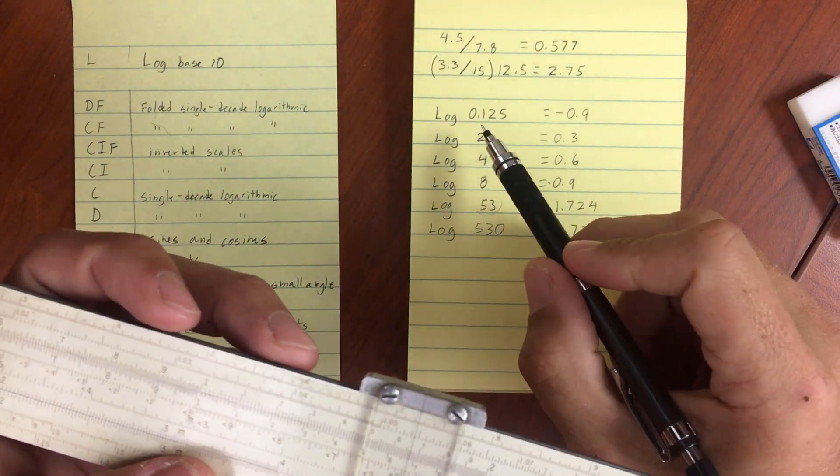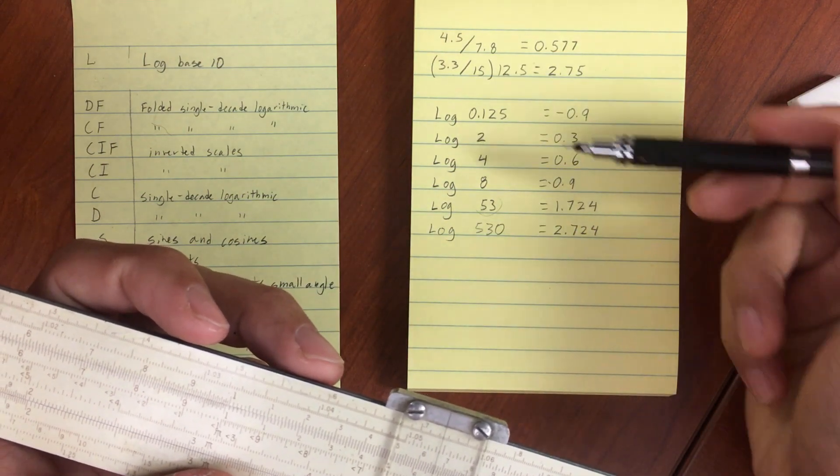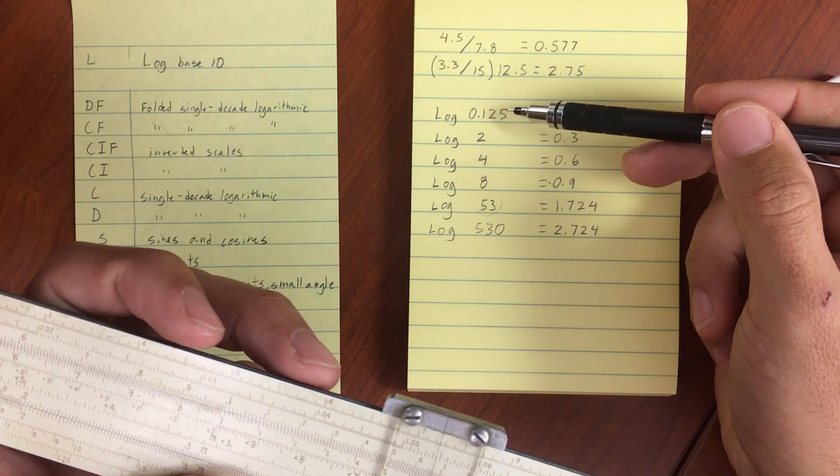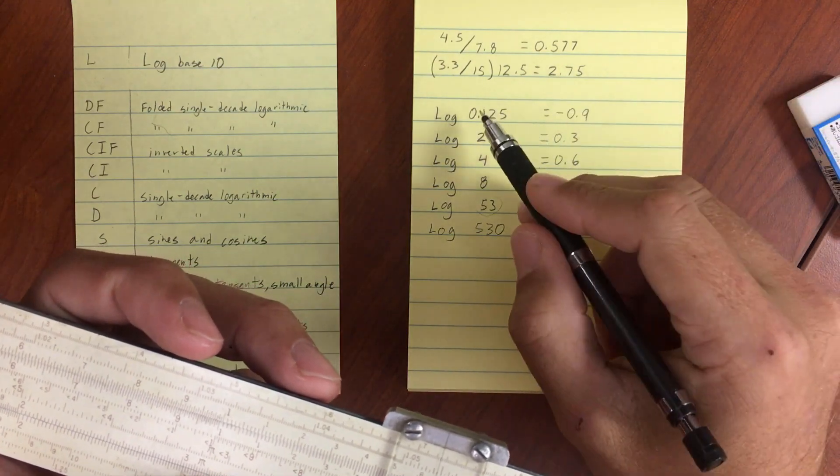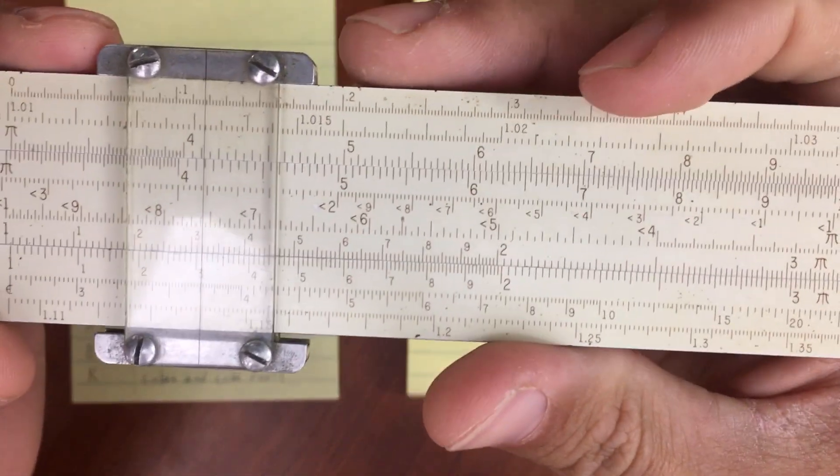The last thing here that I wanted to do is, just like we added one here, if we are less than one we need to subtract. So point 125. Let me just go ahead and do this on my scale.